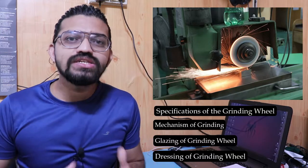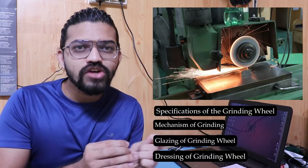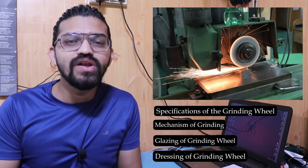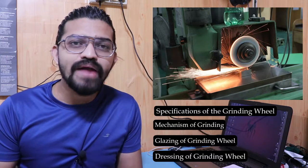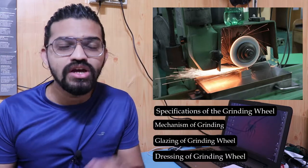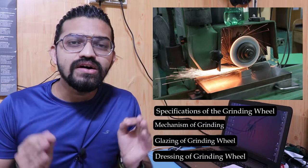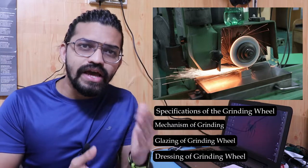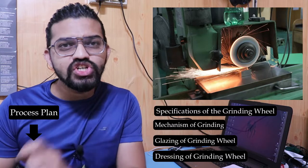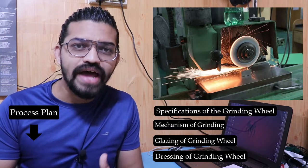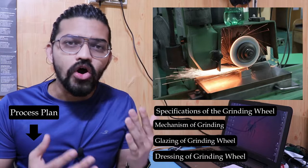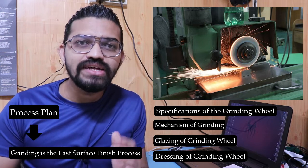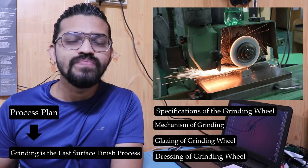In every manufacturing industry, from job shop production systems up to mass production systems, you will see grinding machines — hand grinders or surface grinding machines. Grinding is the basic process adopted by every manufacturing industry. In any process plan, after milling, shaping, or turning, grinding is the last process, and very little material gets removed.